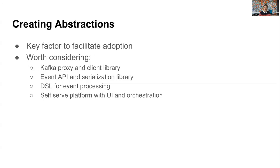The third principle is to create abstractions. Abstraction is an important factor to facilitate adoption of any complicated system. When it comes to real-time data infrastructure, there are a few common abstractions worth considering: leveraging a Kafka REST proxy, creating event APIs and serialization libraries, providing a DSL framework like Flink SQL, and providing high-level UIs with orchestration.